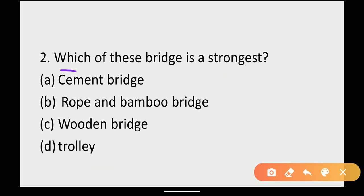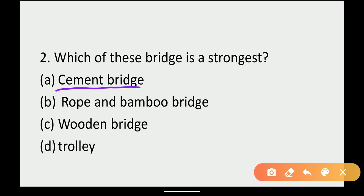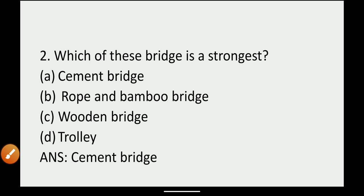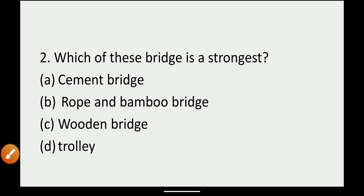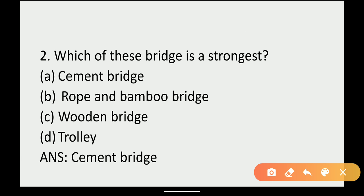Second question: which of these bridges is the strongest? Option A: Cement bridge. Option B: Rope and Bamboo bridge. Option C: Wooden bridge. Option D: Trolley. The one made up of iron rods and bricks is the cement bridge, so your answer is cement bridge.